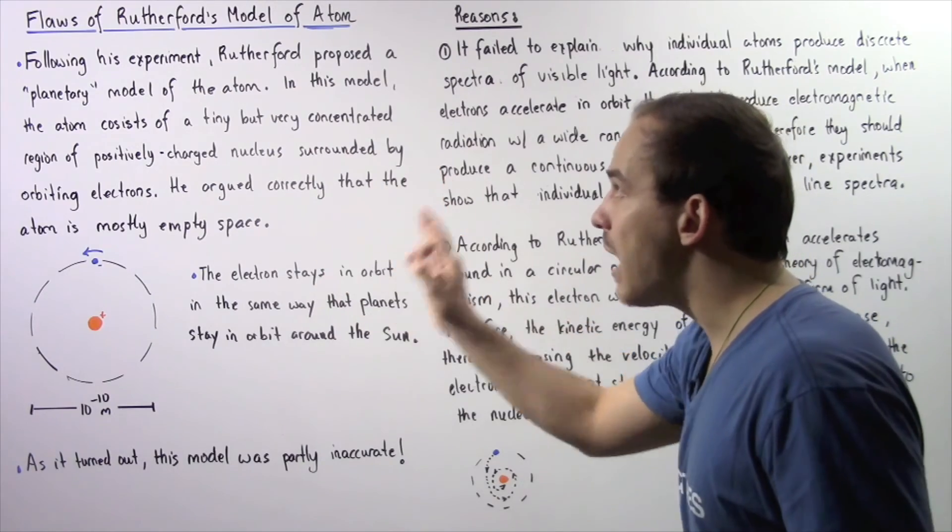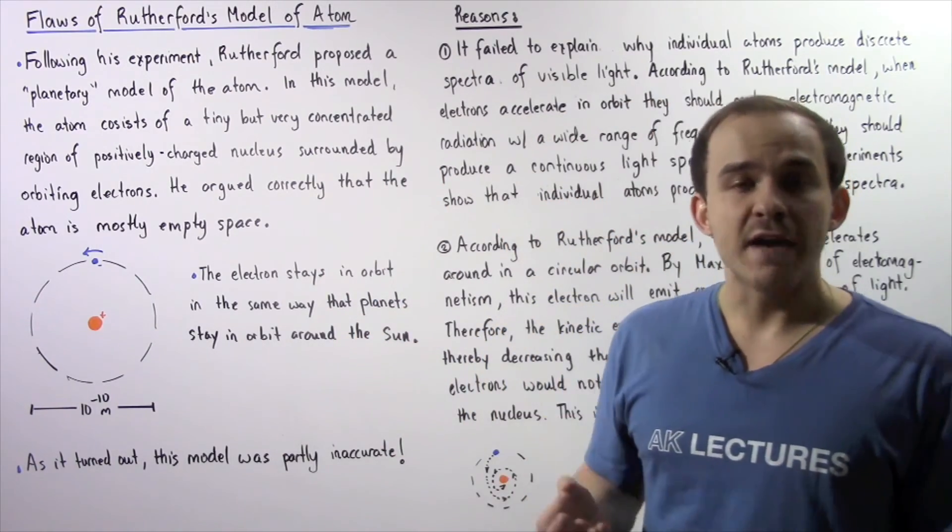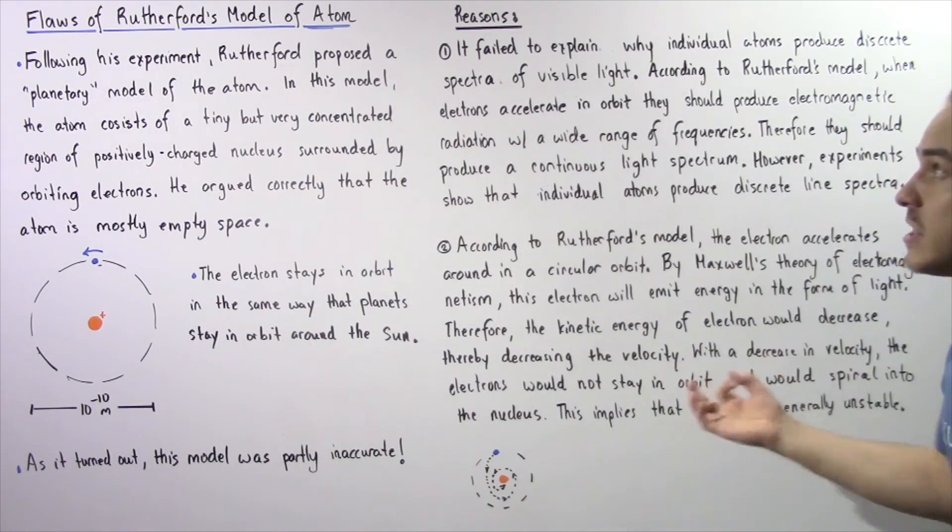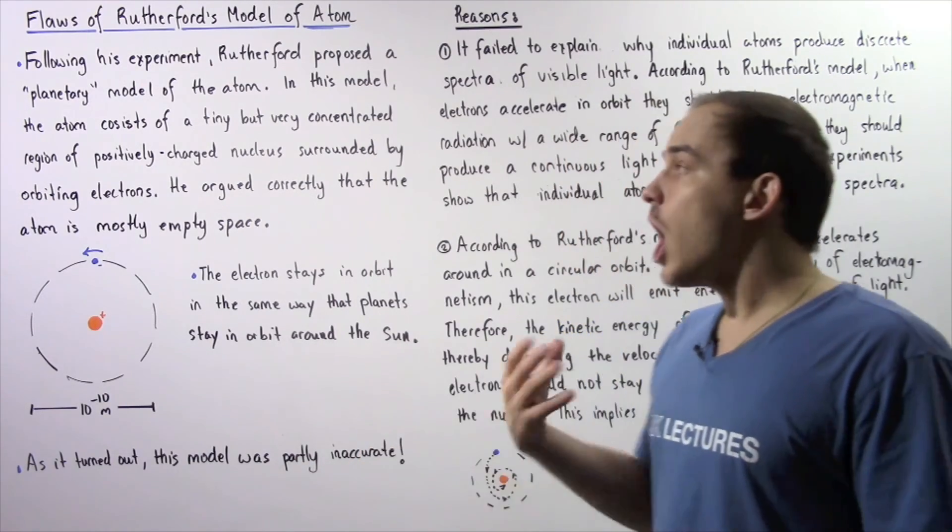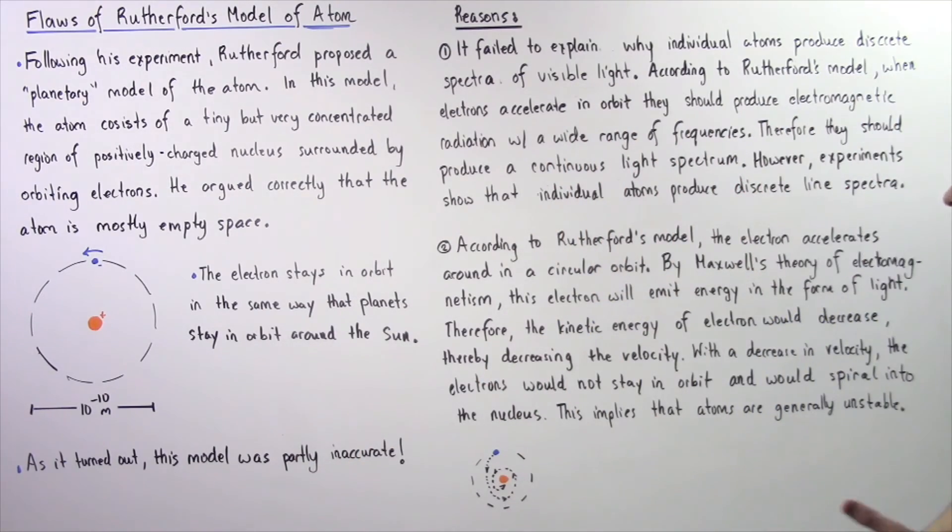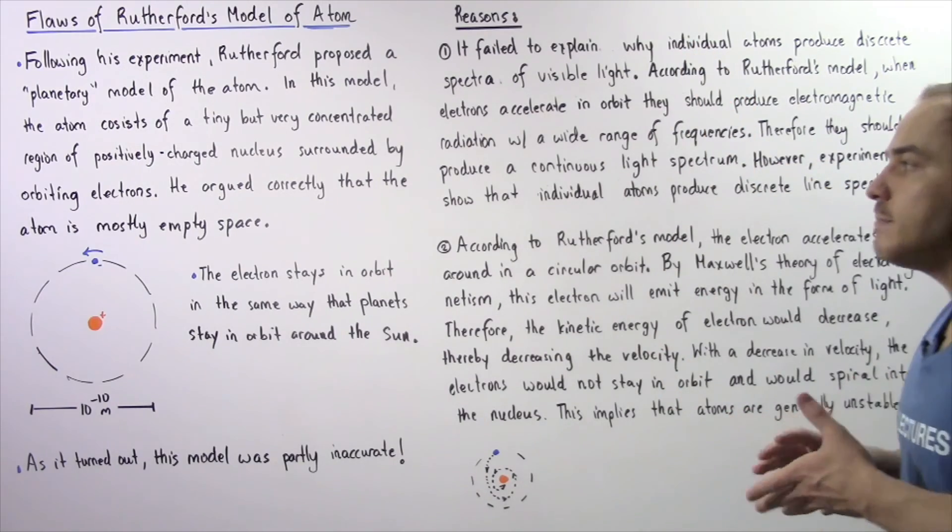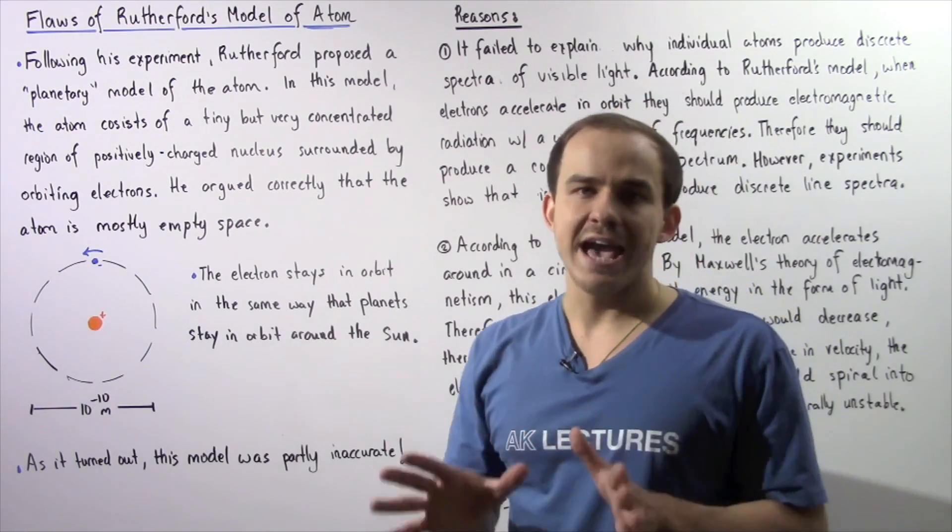if the planetary model of the atom is correct, then atoms are, in fact, generally unstable. And so this means that the model cannot actually be a true depiction of what the structure of the atom looks like. So these are the two flaws that basically disprove Rutherford's model of the atom.